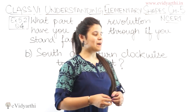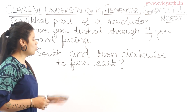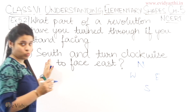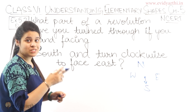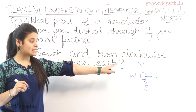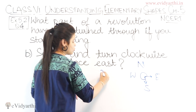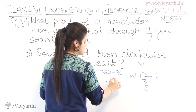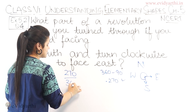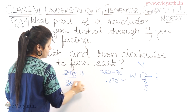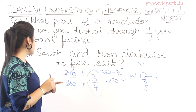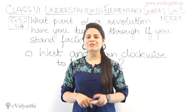Now coming to part (b): start facing south and turn clockwise to face east. Drawing the directions — north, south, east, west — you are standing facing south, and you have to turn clockwise to reach east. Again, the direct angle from south to east is 90 degrees, but since we go the reflex way clockwise, it is 360 minus 90, which is 270 degrees. So the fraction is 270 upon 360, which simplifies to 3 upon 4.